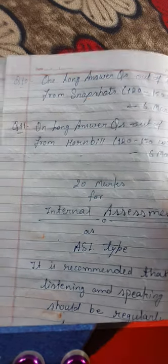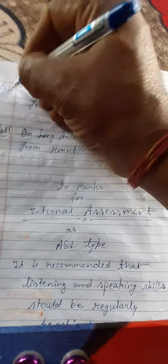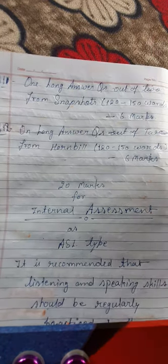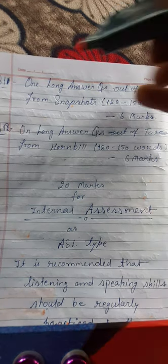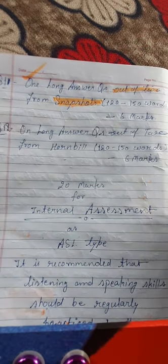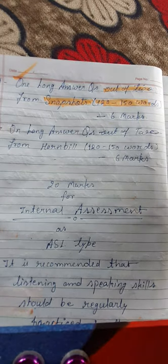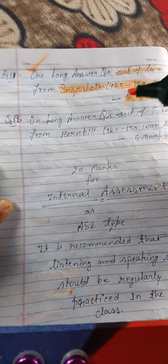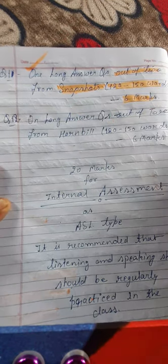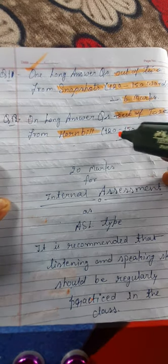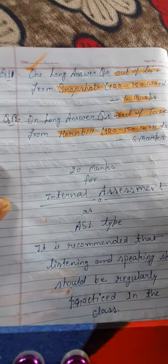Question 11 is also a long answer type question — attempt one out of two. This is from Snapshot, with a word limit of 120 to 150 words, carrying six marks. Question 12 is similarly one long answer type question out of two, from Hornbill, also with a word limit of 120 to 150 words and carrying six marks.